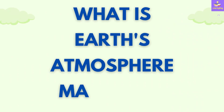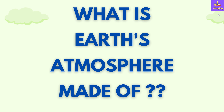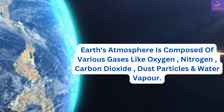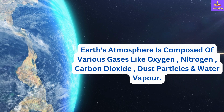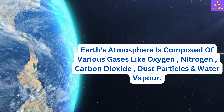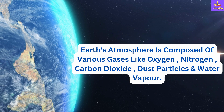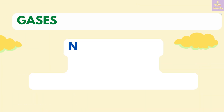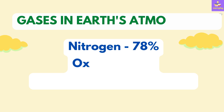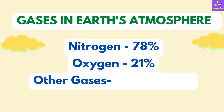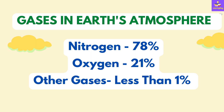What is Earth's atmosphere made of? Earth's atmosphere is composed of various gases like oxygen, nitrogen, carbon dioxide, dust particles, and water vapour. Nitrogen is 78%, oxygen is 21%, and all the other gases combined constitute less than 1%.